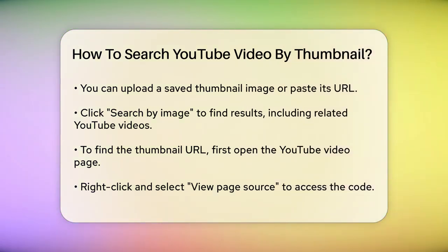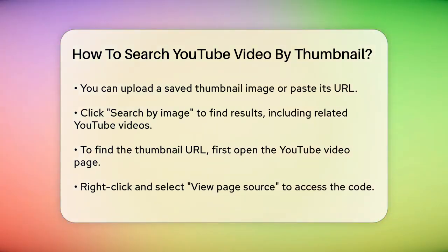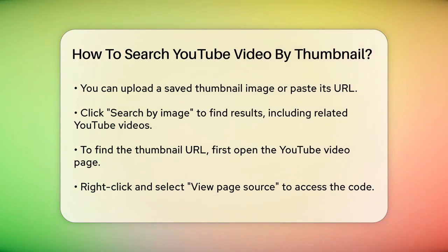You have two options here. If you have the thumbnail image saved on your computer, click on 'Upload an image' and select the file. If you have the URL of the thumbnail, paste it into the 'Paste image URL' field. Four: click the 'Search by image' button. Google will then show you results where this image is used, including any YouTube videos that feature this thumbnail.